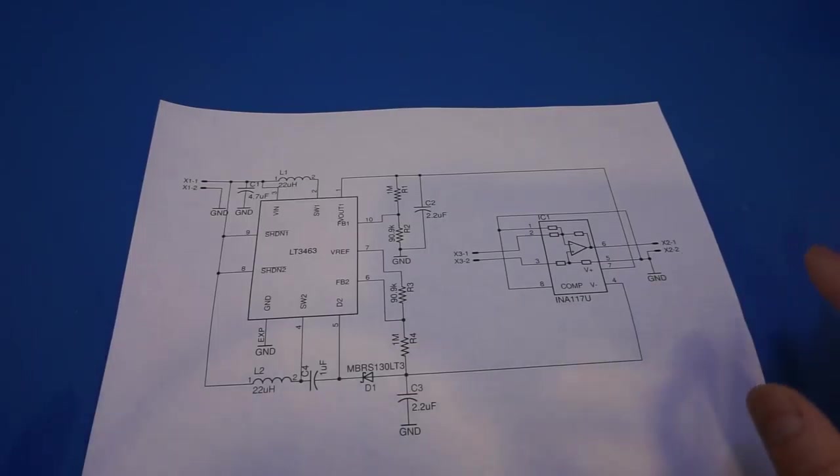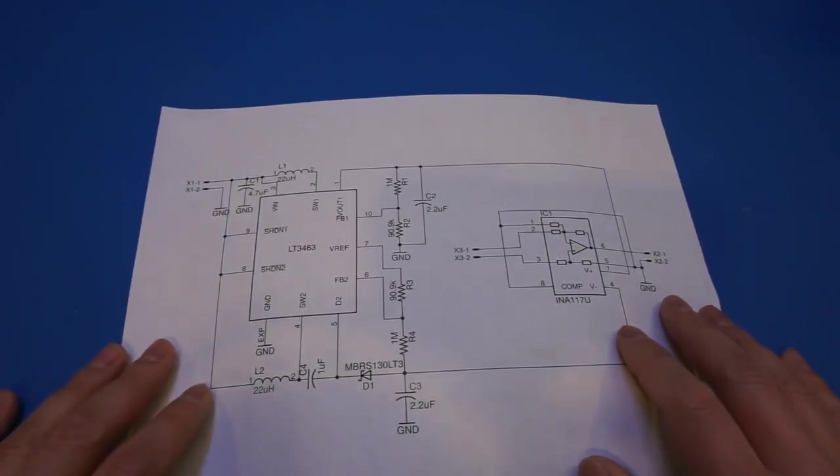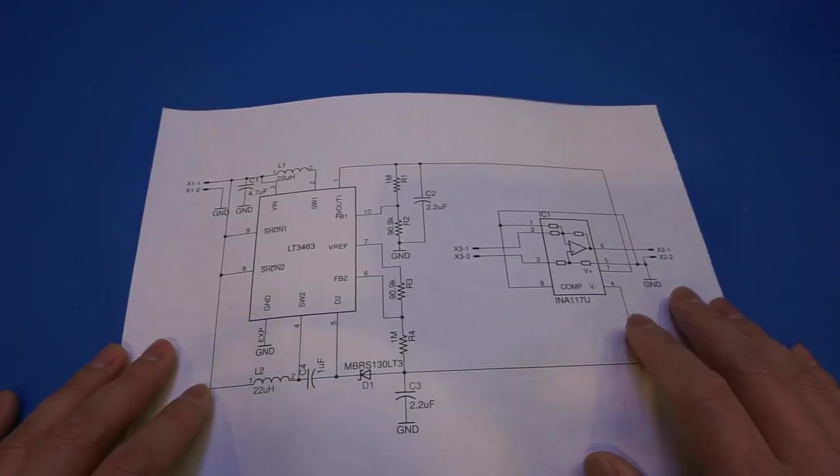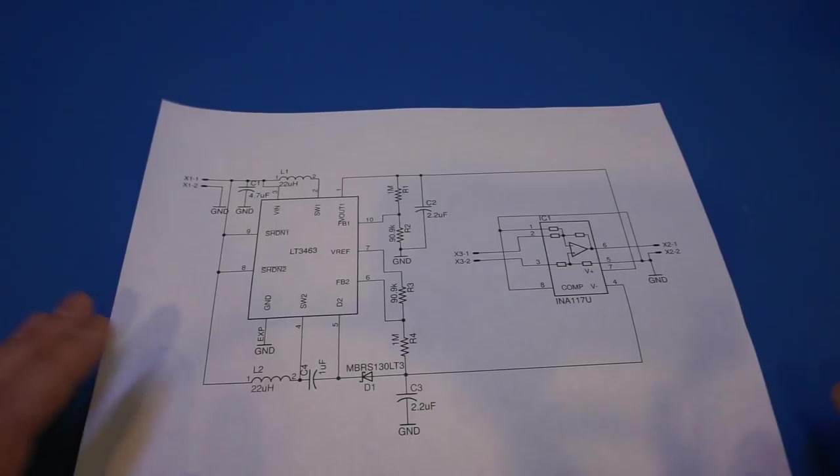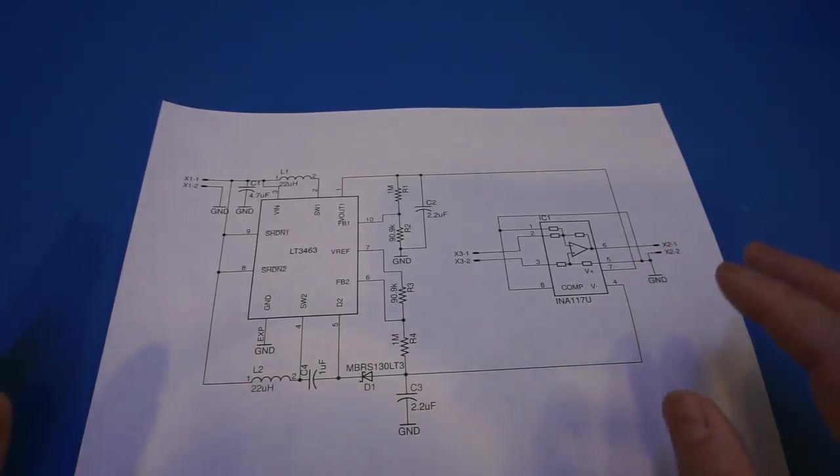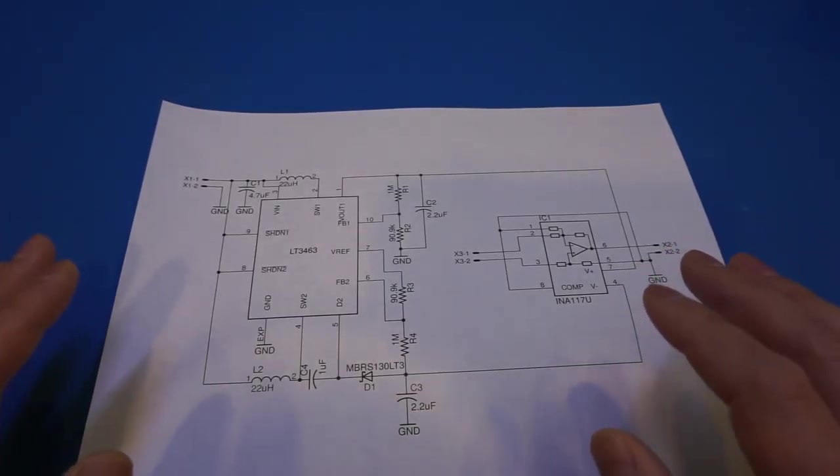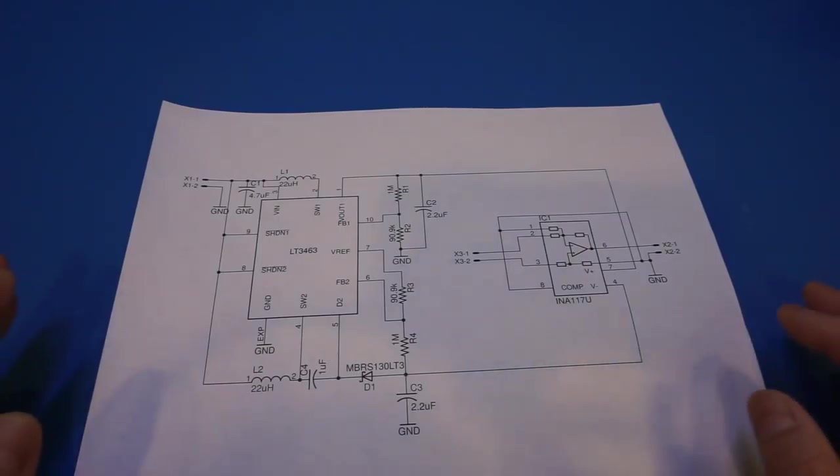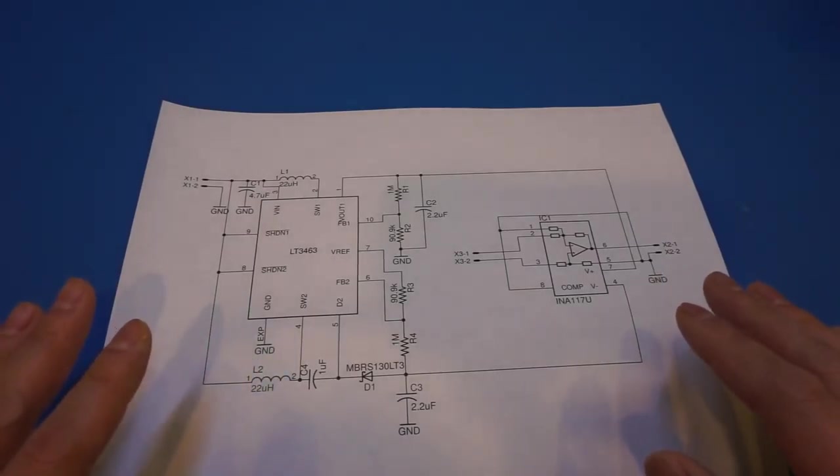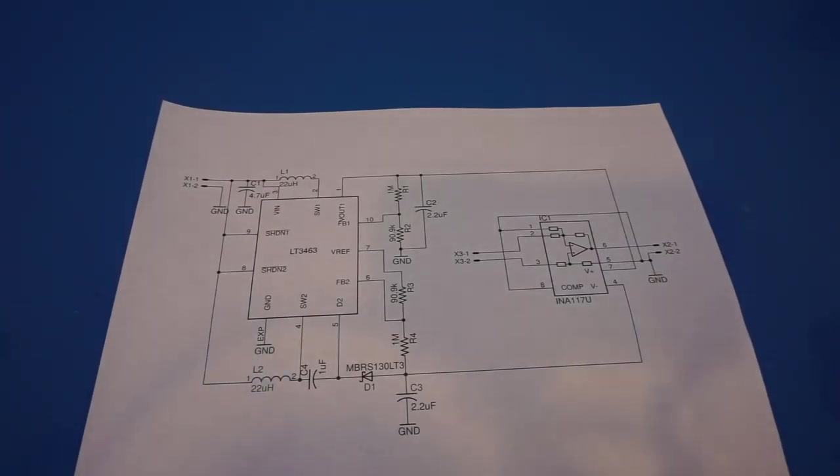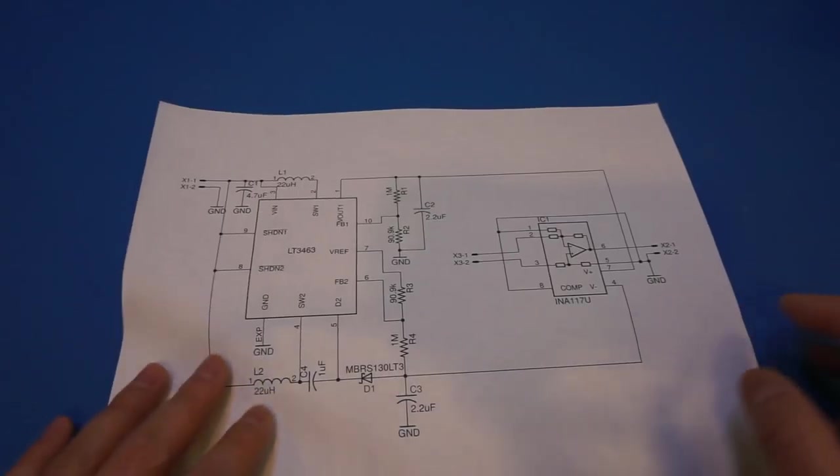Of course, I could have made the amplifier a little bit more precise by incorporating an offset adjustment circuitry. But for INA117, the offset voltage is extremely low and the typical offset voltage value is only 0.1 millivolt. And even at the maximum quoted offset voltage is only 1 millivolt. So this is good enough for most scenarios. So I did not bother adding the offset adjustment resistors and potentiometer.